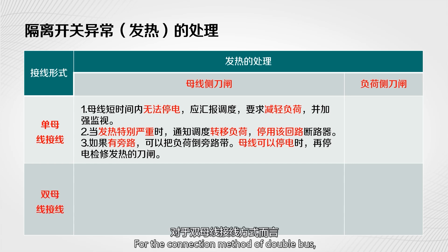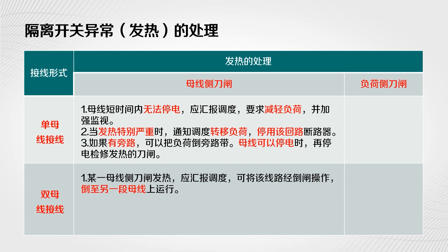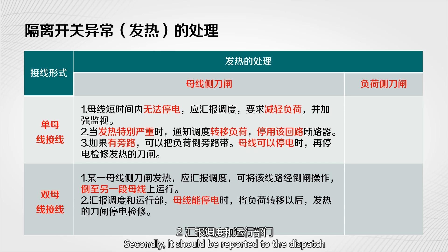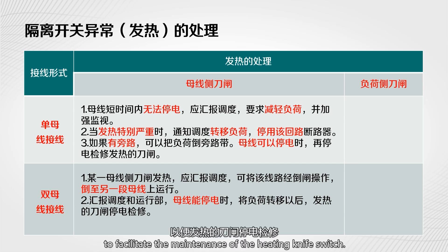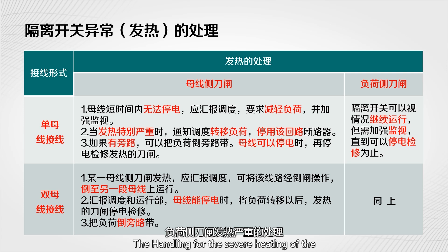For the double bus connection method: First, if the knife switch of a certain bus bar heats up, report to the dispatch department and switch the line to another section of bus for operation. Second, report to the dispatch and operation departments so that when the bus can be powered off, the load is transferred to facilitate maintenance of the heating knife switch. Third, switch the load to the bypass belt.